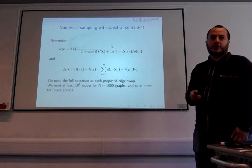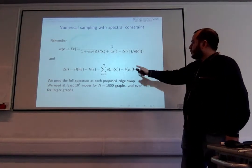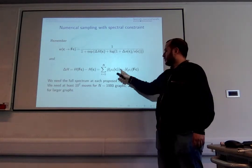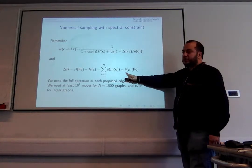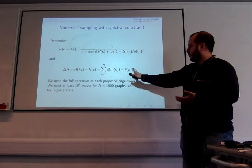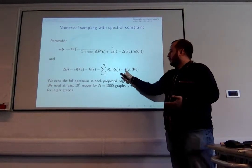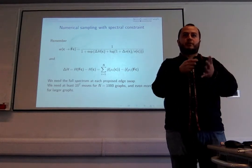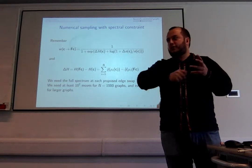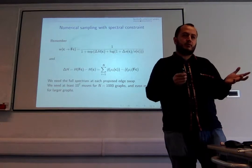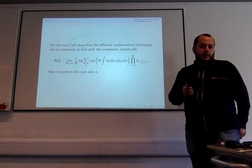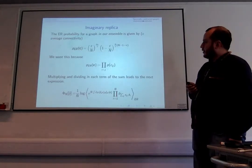Sampling in this setting is more tricky. For each proposed edge swap in the Markov chain you need to calculate the change in energy, which now requires evaluating functions of all eigenvalues — meaning you must diagonalize the whole matrix for each swap. Some people suggest approximate eigenvalue updates since only one edge changes, but I don't believe that after millions of swaps the measure remains correct. I think the only reliable way is full diagonalization each time.